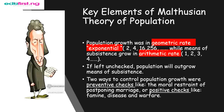Now let's look at the key elements of Malthusian theory of population. Number one is that population growth was in geometric — that is, exponential — rate, meaning 2, 4, 16, 256, galloping like that. Meanwhile, means of subsistence increases more slowly. If left unchecked, Malthus said population will outgrow means of subsistence. He came up with two ways to control population: preventive checks like moral restraint and postponing marriage, and positive checks like famine, disease, and warfare.